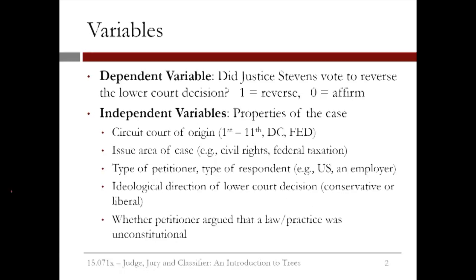In this problem, our dependent variable is whether or not Justice Stevens voted to reverse the lower court decision. This is a binary variable, taking value 1 if Justice Stevens decided to reverse or overturn the lower court decision, and taking value 0 if Justice Stevens voted to affirm or maintain the lower court decision.